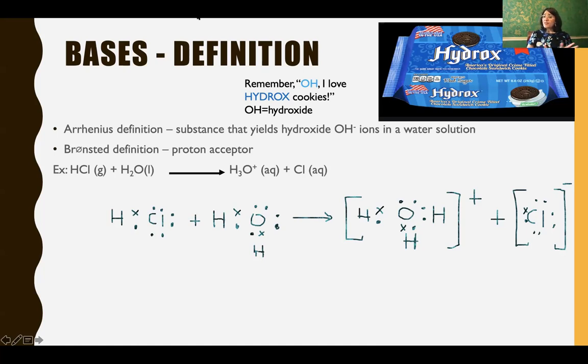The Arrhenius definition, remember we learned for Arrhenius acid it yields hydrogen ions, but for bases it yields hydroxide ions in the water solution. Remember Bronsted acid is a proton donor, but the Bronsted base is the proton acceptor. And we can see that in this reaction. And remember our Lewis dot structures that we learned. So I took the hydrogen and I put the electron as an X so you can see what belongs to what. So the hydrogen donates to the water. So that is the proton donor and the water is the proton acceptor. Now you have H3O, the hydronium ion.